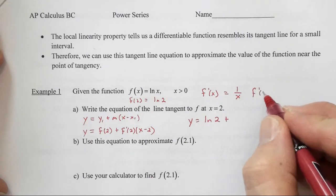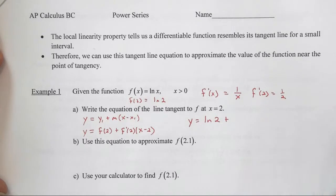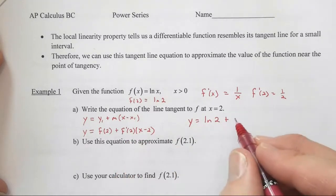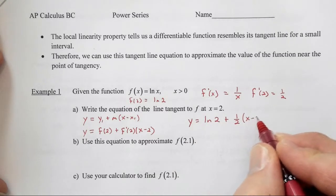So when we want f prime of 2, we'll plug 2 in for x, so that gives us 1 half. So into our equation, f prime of 2 is 1 half, and then we have x minus 2.